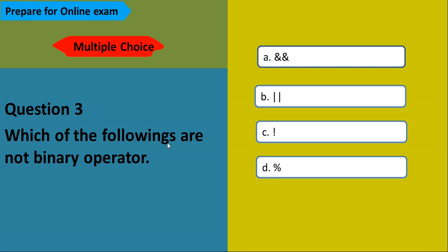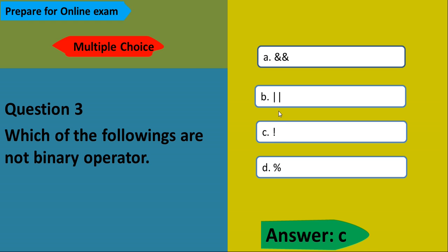Question number three: Which of the following is not a binary operator? The options are AND, OR, NOT, and modulus (%). The answer is C — NOT. NOT is not a binary operator; it uses only a single operand.